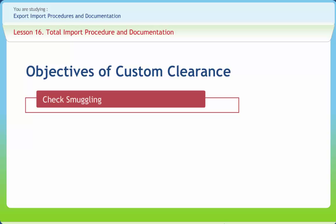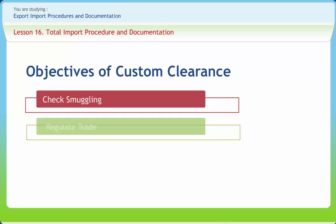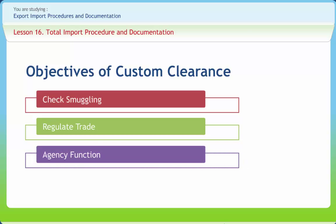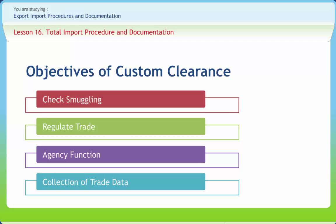Custom clearance helps in regulating trade in accordance with national objectives and policies. It also undertakes agency functions — for example, it is the customs' responsibility to ensure that requirements emanating from different acts such as the Foreign Exchange Management Act or the Quality Control and Preshipment Inspection Act are complied with. Customs also collects trade data and submits it to the Directorate General of Commercial Intelligence and Statistics, Calcutta, Ministry of Commerce, for use by government departments, trade and industry, researchers, and others concerned with international trade.